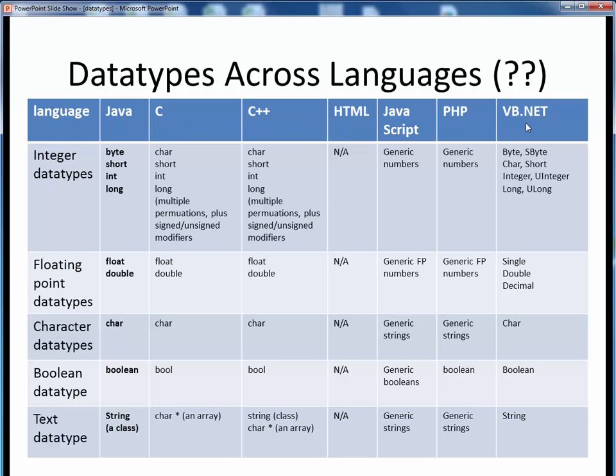Note that all the languages have very similar or identical data types. C and C++, in particular, are very closely similar.